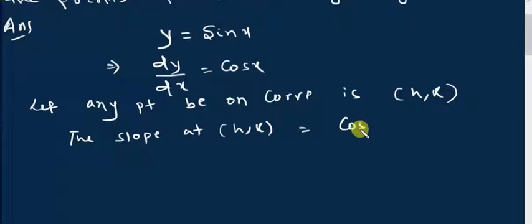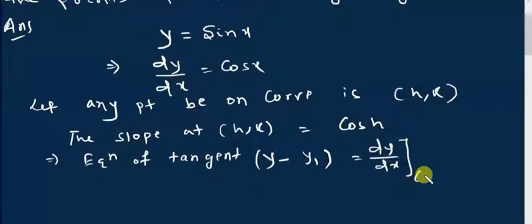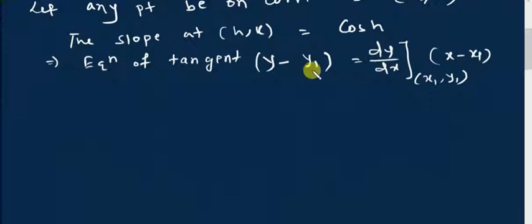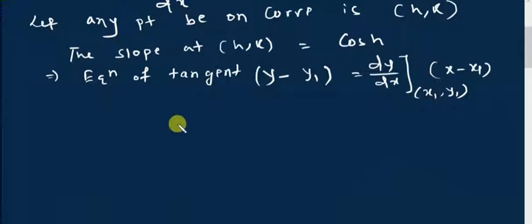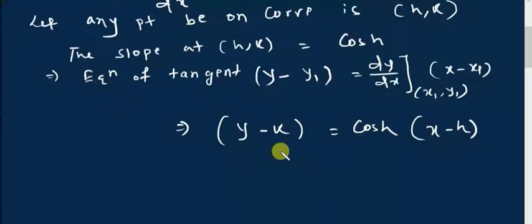Now the equation of the tangent is y - y₁ = (dy/dx) · (x - x₁). Taking the point (h, k) as (x₁, y₁), we get y - k = cos h · (x - h). This is the equation of the tangent at the point (h, k).